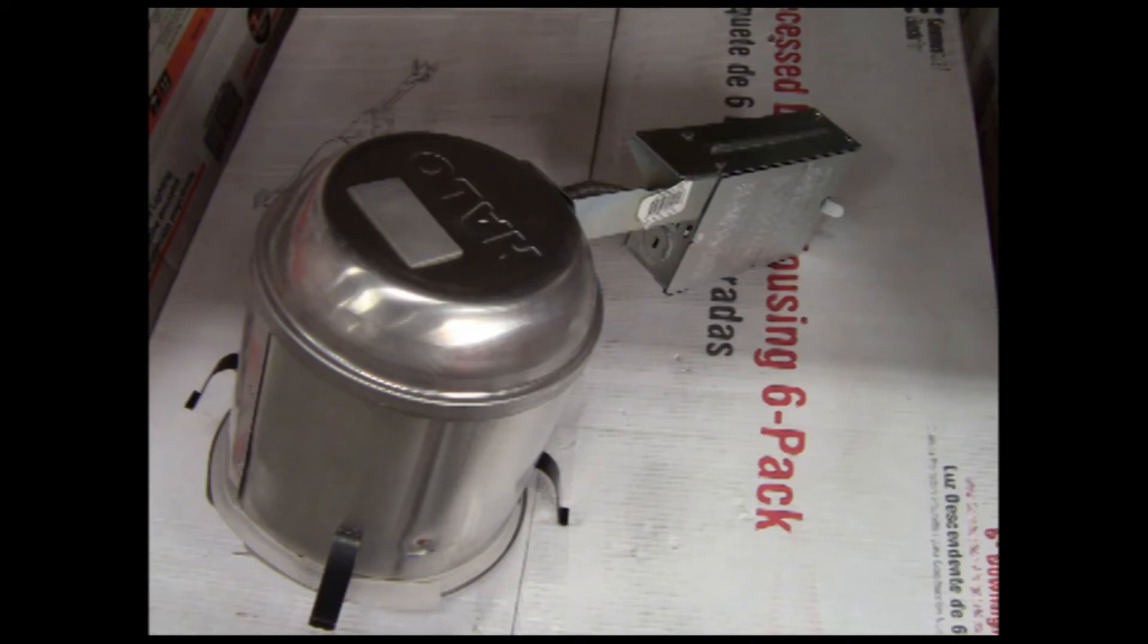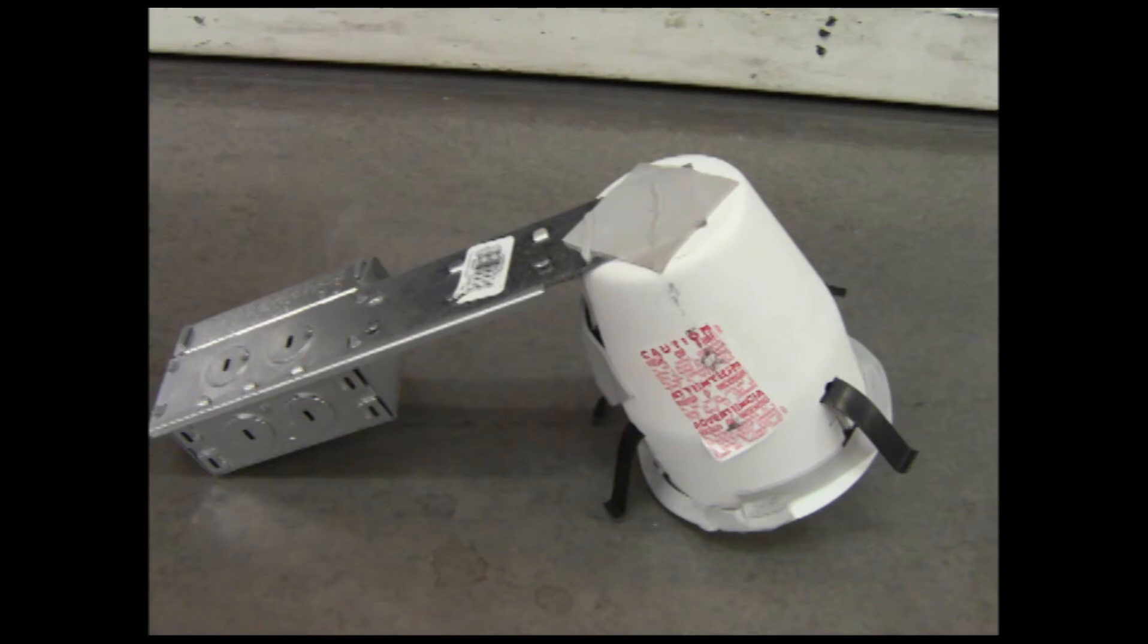This is a 6-inch remodel can for use in drywall. In some cases, it can be used in drop ceilings, but I would check with local building codes before stocking up on these. This is the same kind of remodel can, except it's the 4-inch or mini can variety.